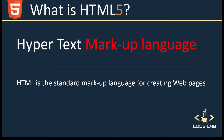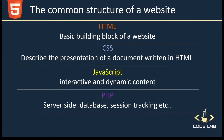Hypertext Markup Language is used to create the content of the page such as the written text. In this slide we've got the common structure of a website. HTML is like the building blocks of a website, while CSS or Cascading Style Sheet is responsible for the design or style of the website, including the layout, visual effects, and background color.